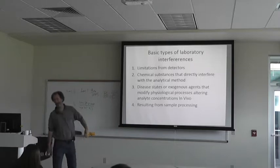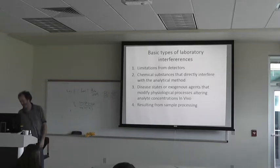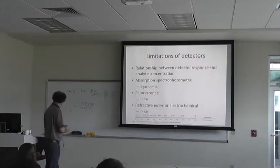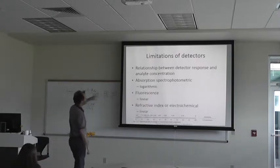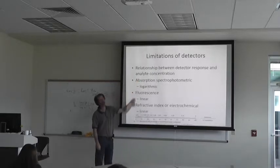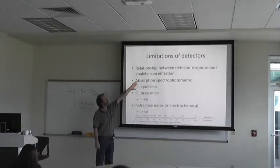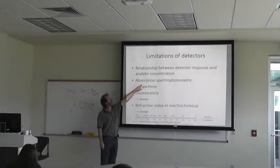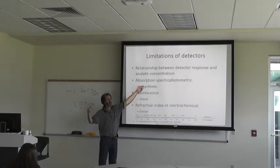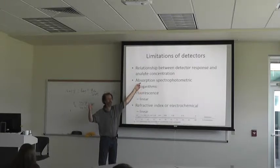So those are the basic laboratory interferences. Limitations of detectors — the relationship between the detector response and the analyte concentration. We can look at absorption spectrometers. What's the relationship between an absorption spectrometer's detector voltage and the concentration?